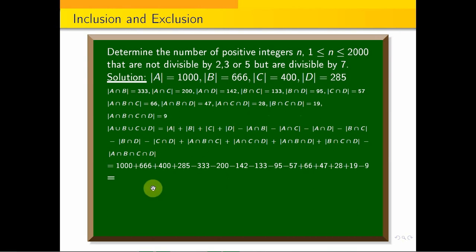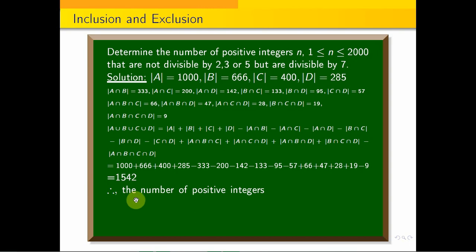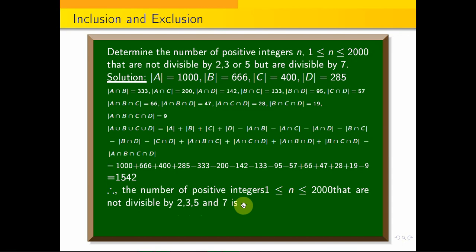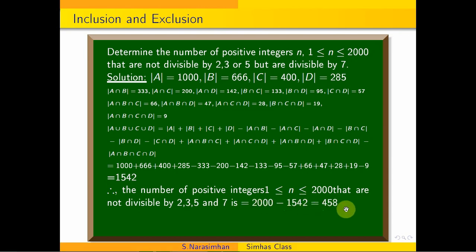Simplifying, we get 1542. So the number of integers divisible by 2, 3, 5, or 7 is 1542. Therefore, the number of positive integers that are not divisible by 2, 3, 5, and 7 is 2000 minus 1542, which equals 458.